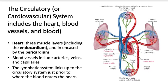Cardio refers to the heart, vascular refers to the blood vessels, and within the blood vessels we have the blood. The three major components of the circulatory system include the heart, the blood vessels, and the blood. Blood includes the water-soluble portion, which is the plasma, and then we have our three types of blood cells. To review these, go to Unit 3.